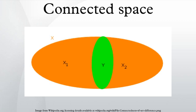A convex set is connected — it is actually simply connected. A Euclidean plane excluding the origin is connected but is not simply connected. The three-dimensional Euclidean space without the origin is connected and even simply connected. In contrast, the one-dimensional Euclidean space without the origin is not connected.